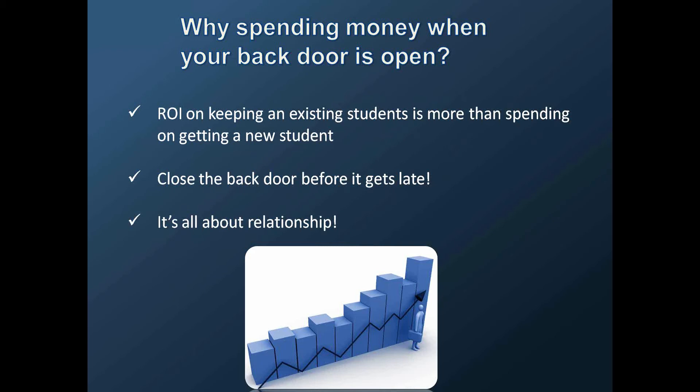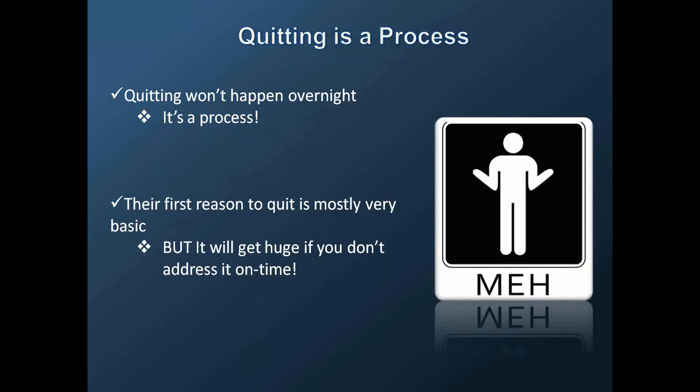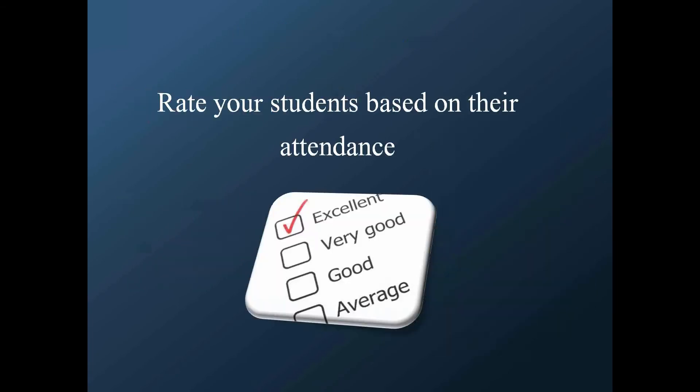Close the back door. We always talk about relationships — develop relationships with your students and know when your students are about to leave. Quitting is a process; it doesn't happen overnight. The first reason someone quits is generally a very basic reason. It always starts with somebody stopping coming to class. When a student becomes a C student, you typically have about three to four weeks before they cancel. I can go to your school and tell you the people that are getting ready to cancel.